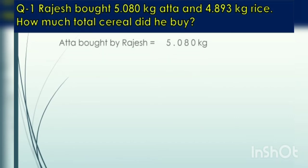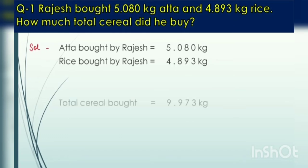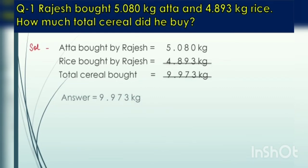For this we have to first write down the statement and then write down the solution. Atta bought by Rajesh: 5.080 kg. Rice bought by Rajesh: 4.893 kg. Now the total cereal he bought is equal to 9.973 kg. You have to remember that while writing down the numbers, you have to write them one under the other following the column method.